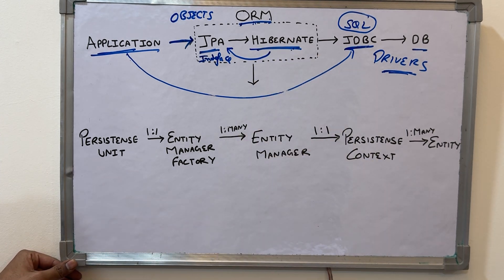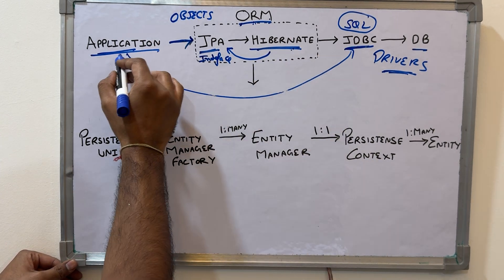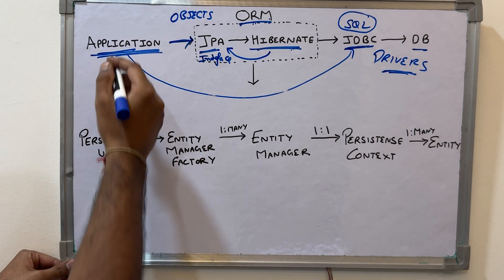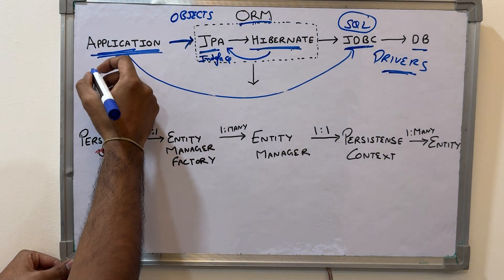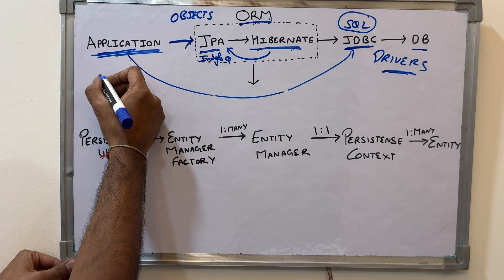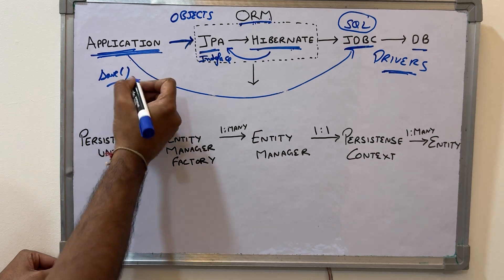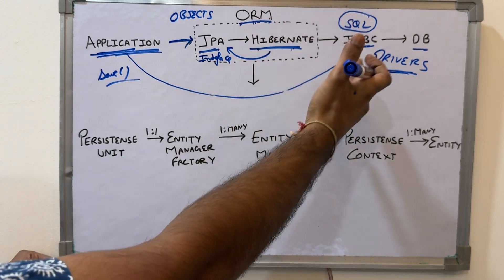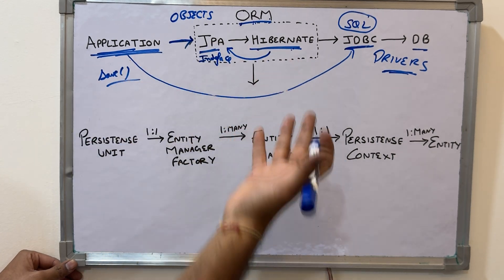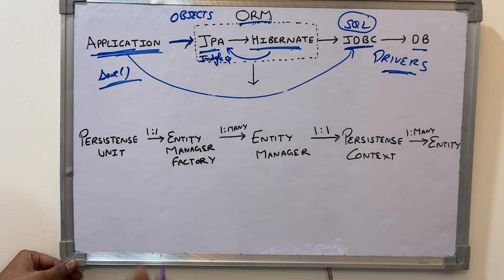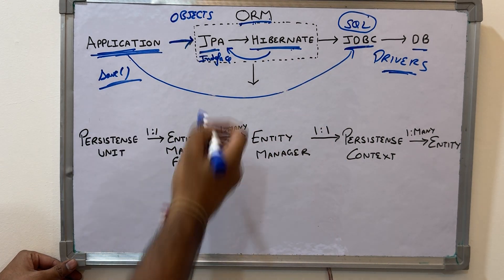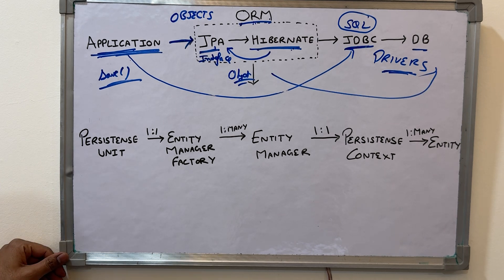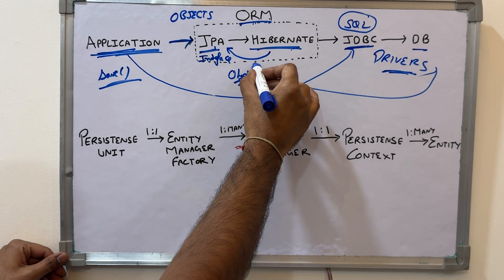Today you are using Hibernate — if you want to switch to OpenJPA, you can do it and your application's business logic remains unchanged. Your application is still calling save, it's still working, and even if you change from Hibernate to OpenJPA it will still work because the JPA interface remains the same.